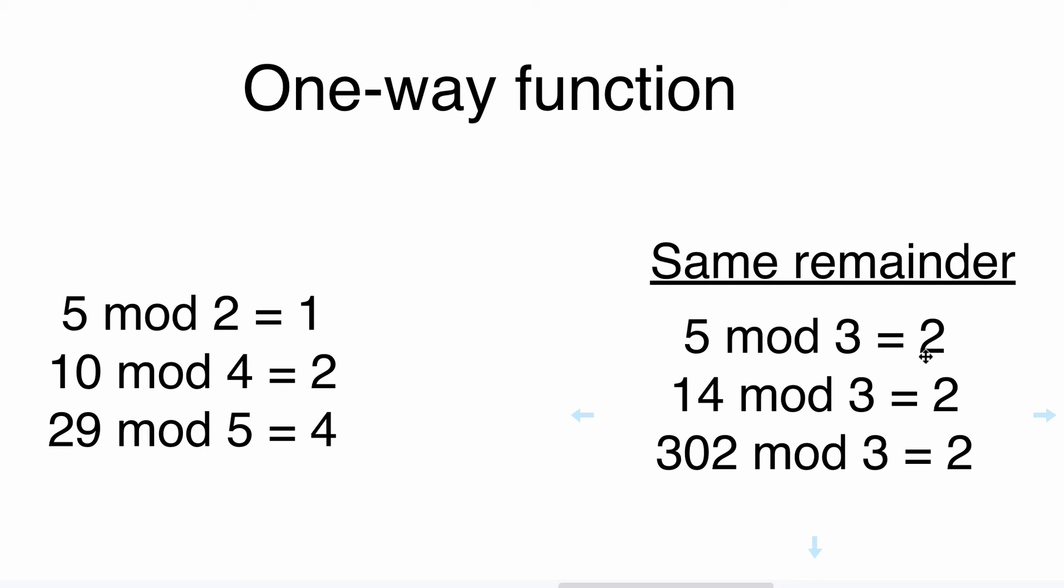The conclusion is: even if someone knows those numbers three and two in those examples, it is not possible to retrieve this number. Because there is an infinite quantity of such numbers where the result of modulus operation by three of each number will give us two.